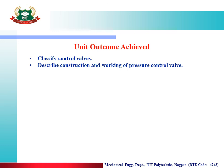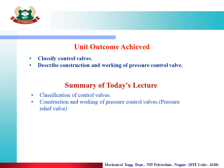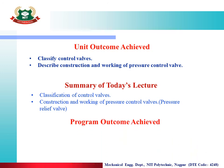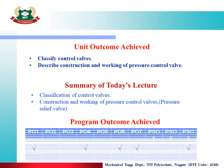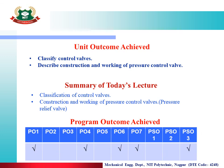Unit outcomes achieved in this lecture: classified control valves, described construction and working of pressure control valve. Summary of today's lecture: classification of control valves, construction and working of pressure control valves, especially the pressure relief valve. Program outcomes achieved: PO1, PO3, PO4, PO6, and PO7.